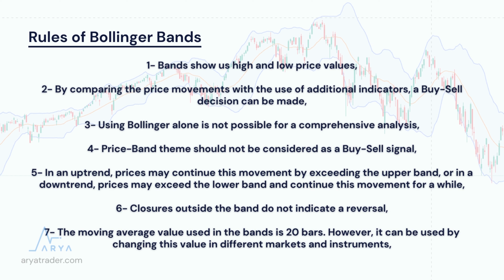Rules of Bollinger Bands: I have simplified and itemized the rules that Mr. Bollinger frequently repeats and which should be carefully considered. Here are those rules: 1. Bands show us high and low price values. 2. By comparing price movements with the use of additional indicators, buy-sell decisions can be made. 3. Using Bollinger alone is not sufficient for a comprehensive analysis. 4. Price touching the bands should not be considered a buy-sell signal. 5. In an uptrend, prices may continue this movement by exceeding the upper band; or in a downtrend, prices may exceed the lower band and continue this movement for a while.